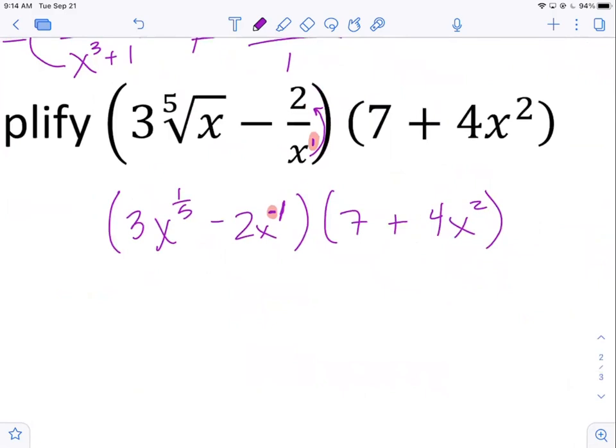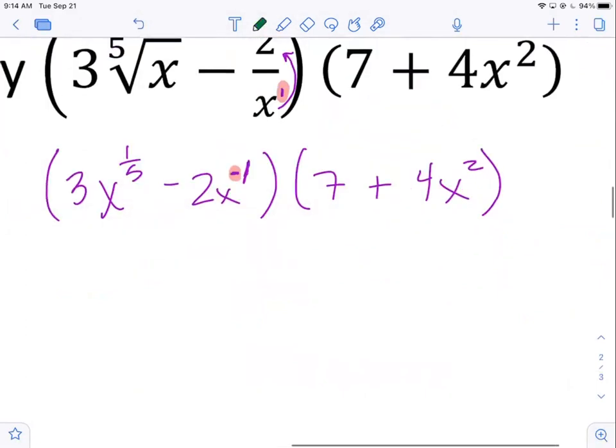All right. So now that we have it all written like this, now we can just foil it out. Now, instead of foiling, because foil only works with the two by two, let's just kind of maybe abandon foil and just kind of learn how to distribute. I think you'll like this better. So when we have multiple terms times multiple terms, I always like to just start with the first term in the first factor and you distribute it all the way through. You're just letting it run its course.